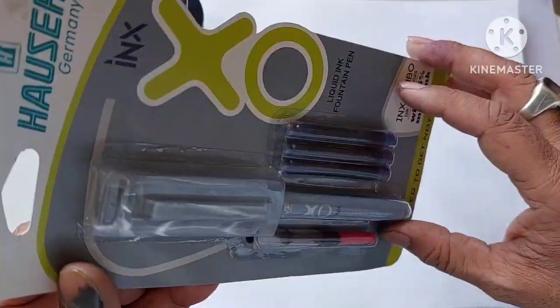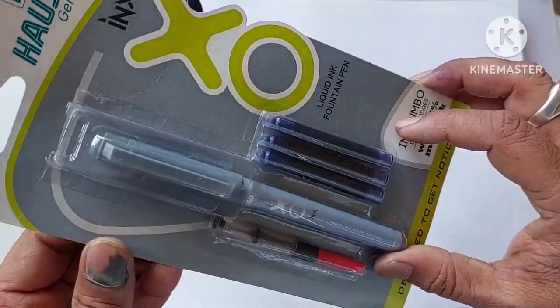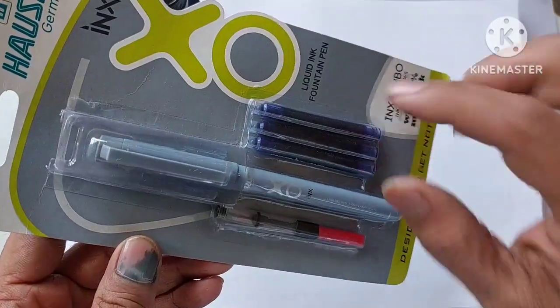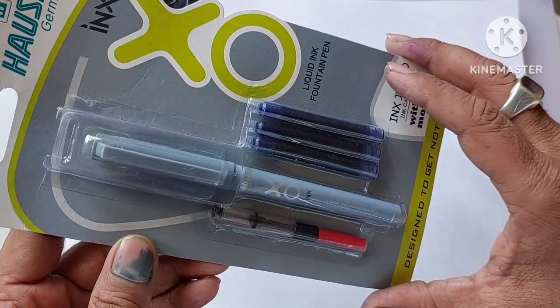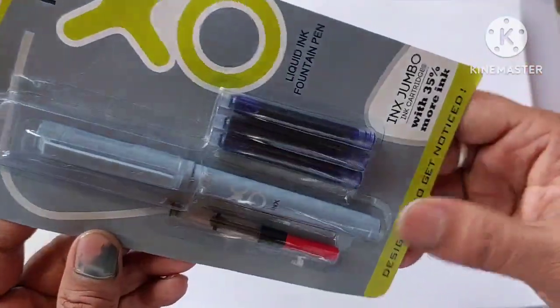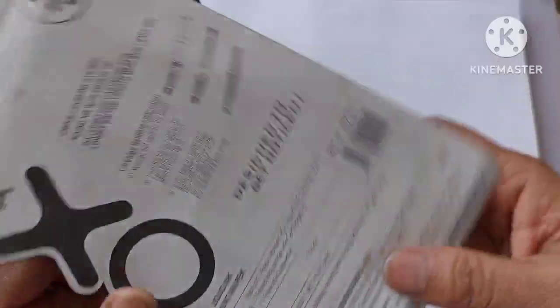Okay so let's unbox and see how this pen looks like. Usually the Hauser pens come with thinner cartridges. This is having a thicker cartridge and it has three cartridges. So a bonus cartridge plus converter is there along with it.